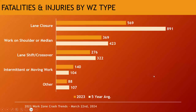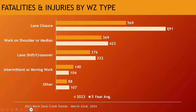Looking at the type of work zone involved in crashes: a lot of work zones involve a lane closure where the actual travel lane is closed. Working on the shoulder or median is another type, but the lane closure work zone type is the most common. In 2023, the lane closure count of 569 is a lot lower than the five-year average for that category.